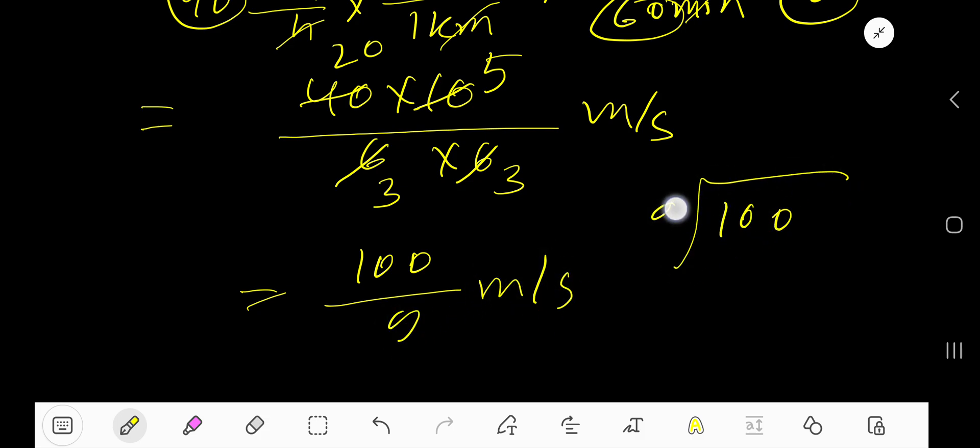Divide 100 by 9. 9 goes into 10 one time. One time 9, 9. Subtract 1. Bring down this 0. 9 goes into 10 one time. One time 9, 9. Subtract 1.